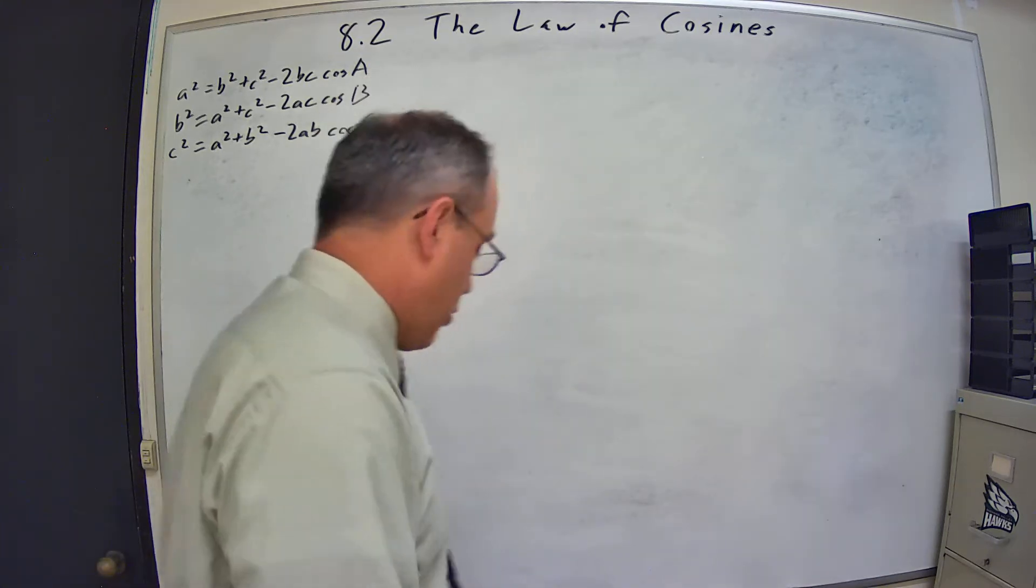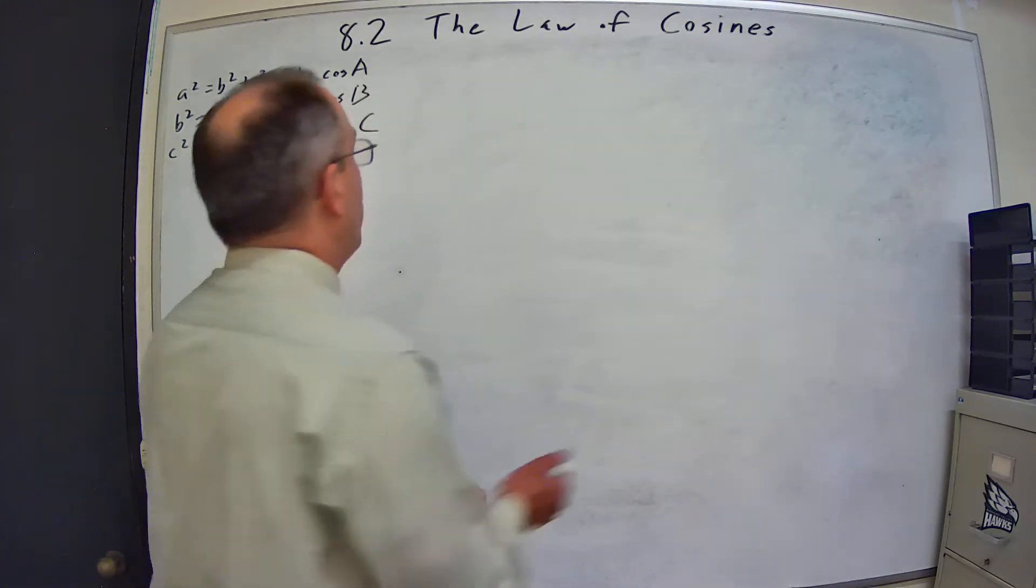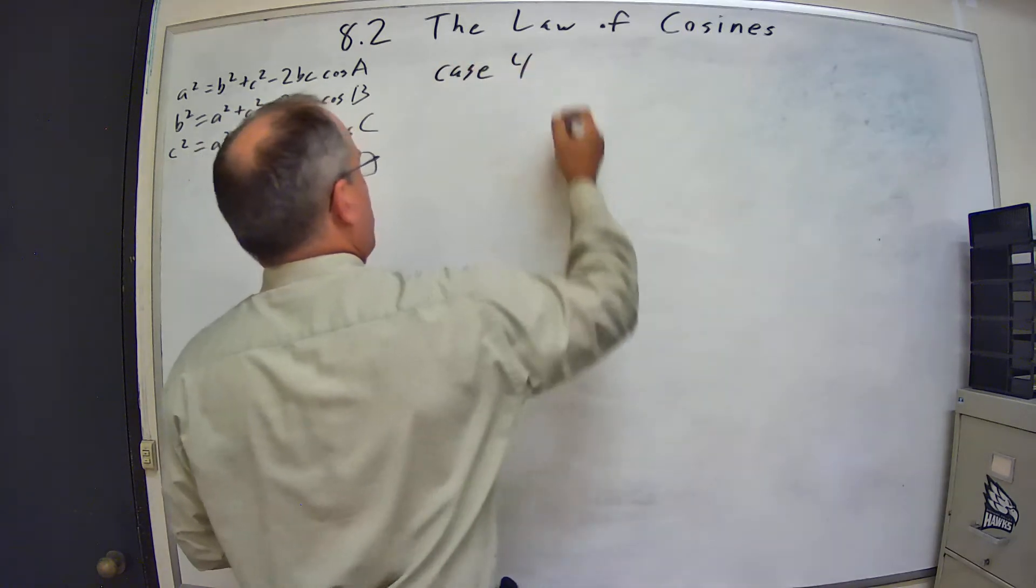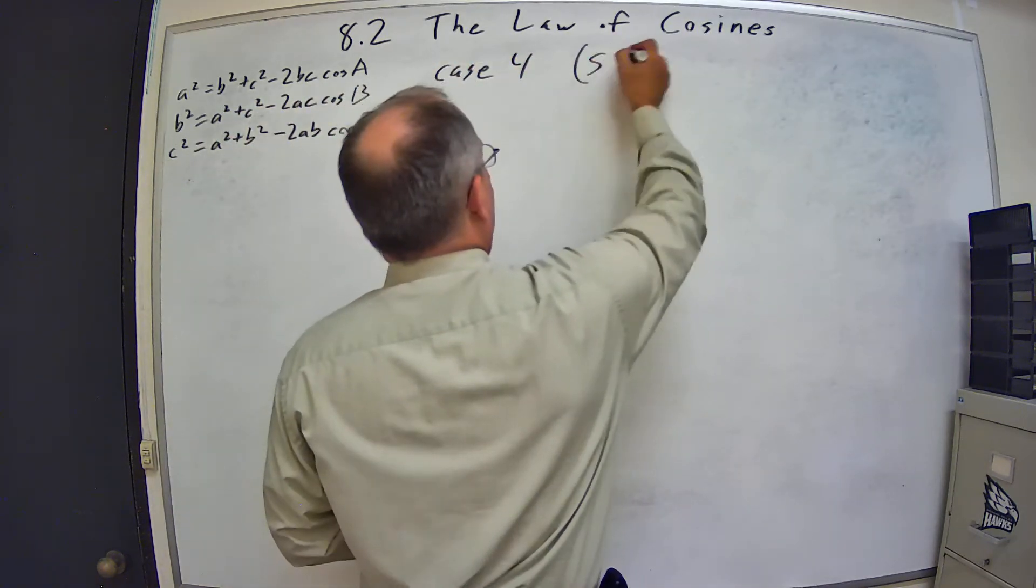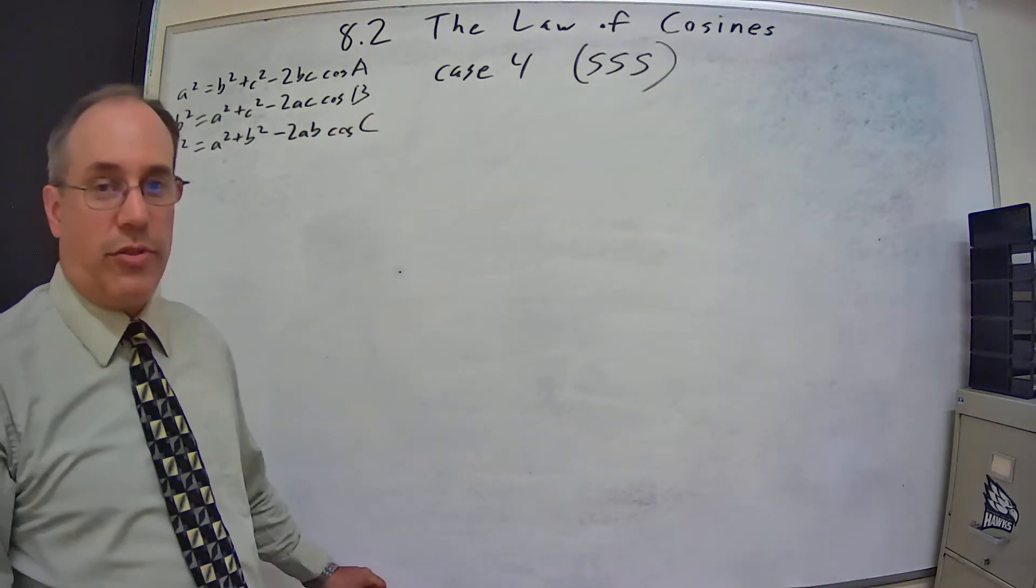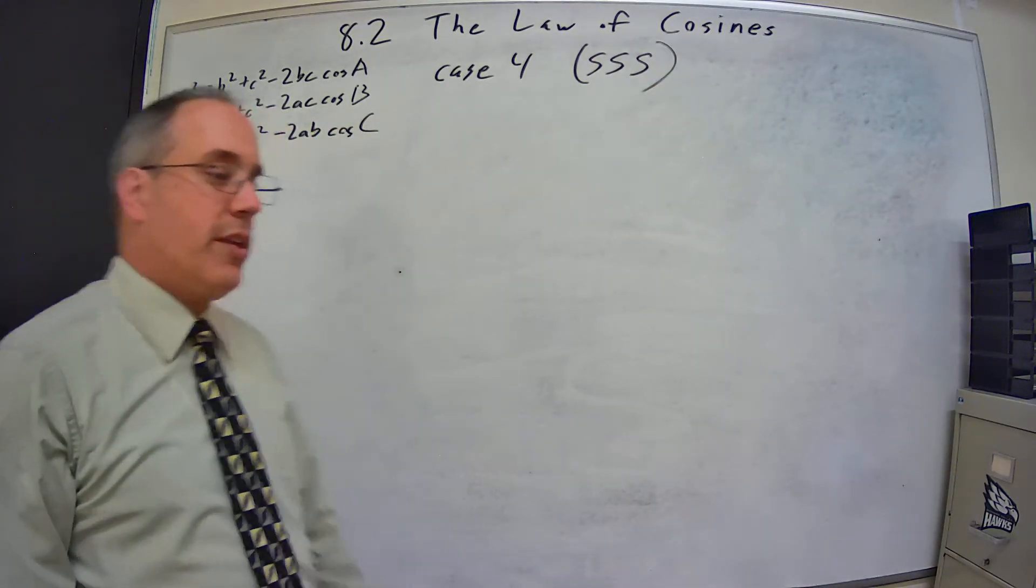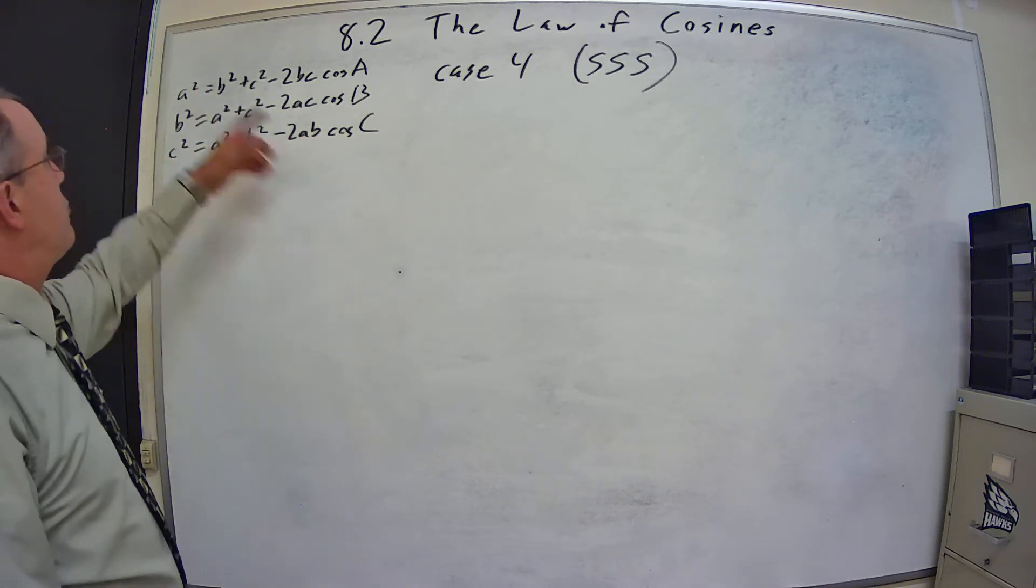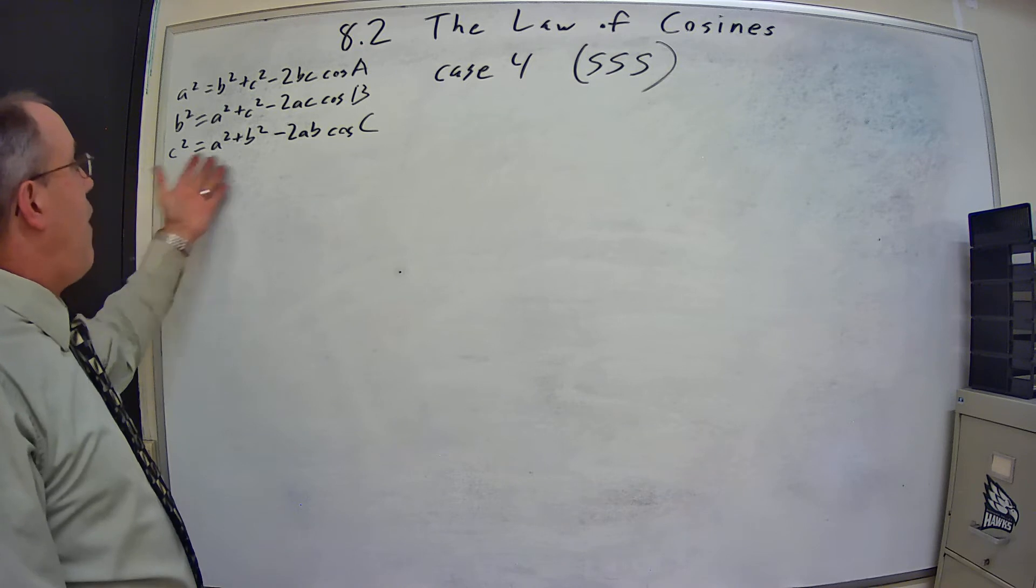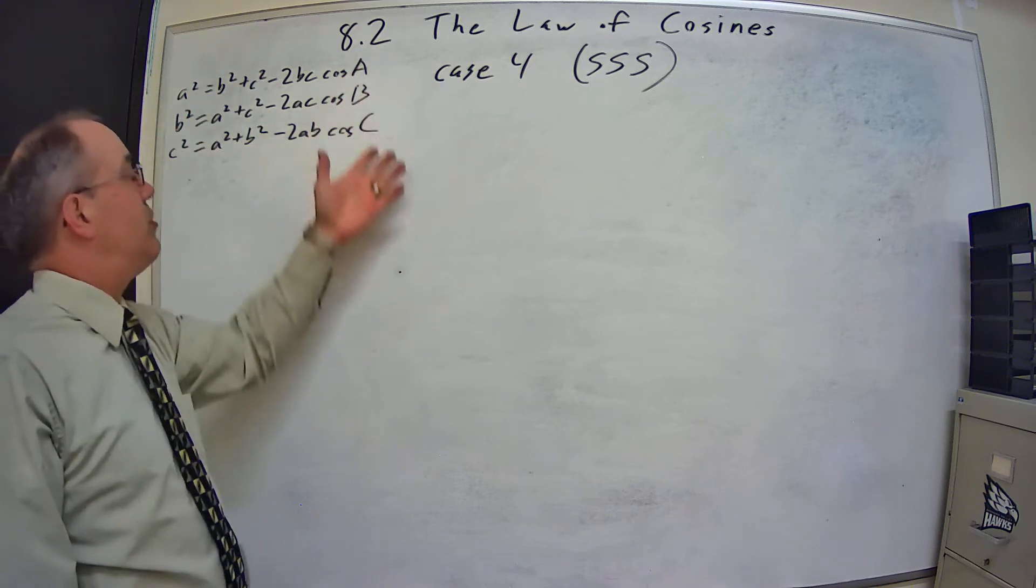Now what we're going to do is go into case 4, which is where we are given the three sides but no angles. We can use the law of cosines for this because we have three different equations that relate all three sides to an angle.